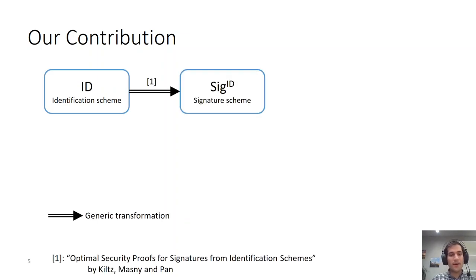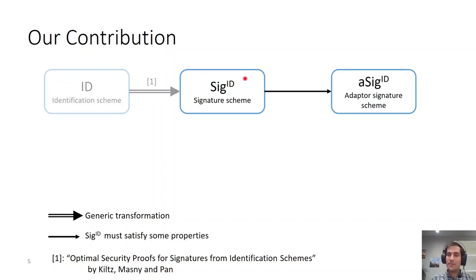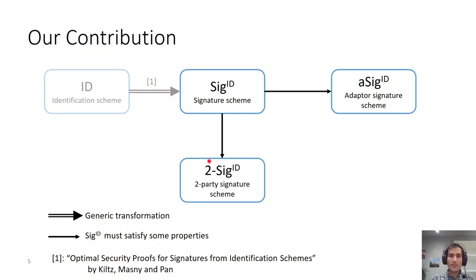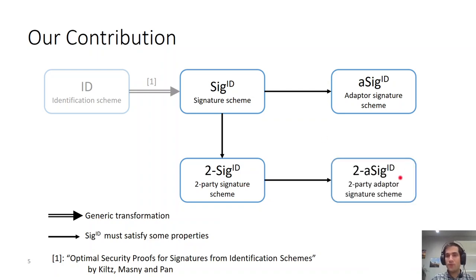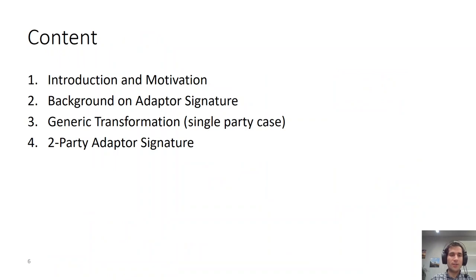This brings us to our contribution. We know from the work by Katz, Mazni, and Pan that identification schemes (ID schemes) can be generally transformed into signature schemes. I will call this class of signature schemes SIGID. In our work, we show how SIGID schemes can be transformed into adapter signatures in the single-party case. Furthermore, we show how SIGID schemes can be transformed into two-party signature schemes, and how these two-party signature schemes can be transformed into two-party adapter signature schemes. Note that our transformations are not generic, and the underlying SIGID must satisfy some properties, which I will go into more details later in this talk.